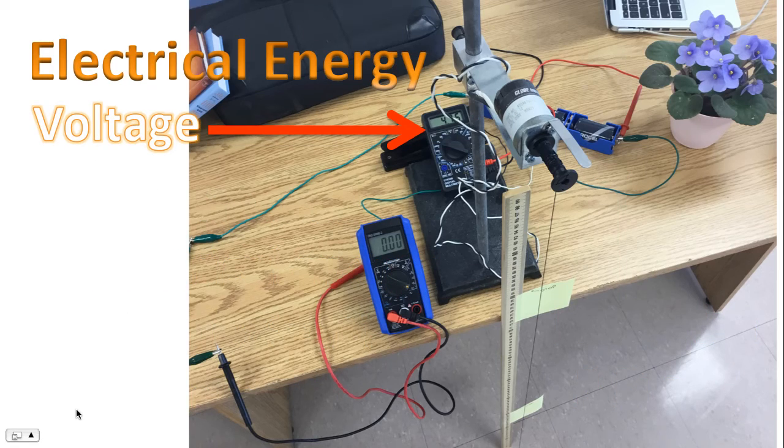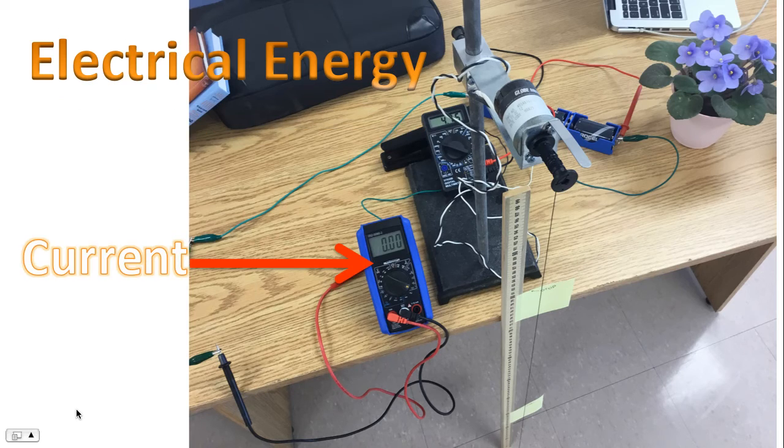To measure electrical energy, we'll need to measure voltage. That multimeter is set to measure voltage. In addition, we'll also have to measure current. That multimeter is set to measure current.